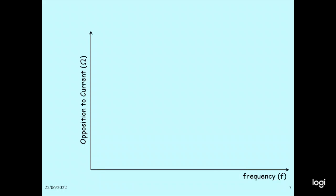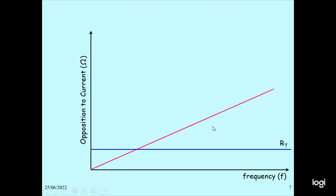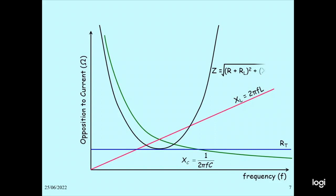You can see the graph of frequency versus opposition to current in ohms. When the frequency equals the resonance frequency, the impedance is minimum at Rd. XL equals 2πFL, which depends on frequency. We can draw Z equal to the square root of (R plus RL) squared plus (XL minus XC) squared.